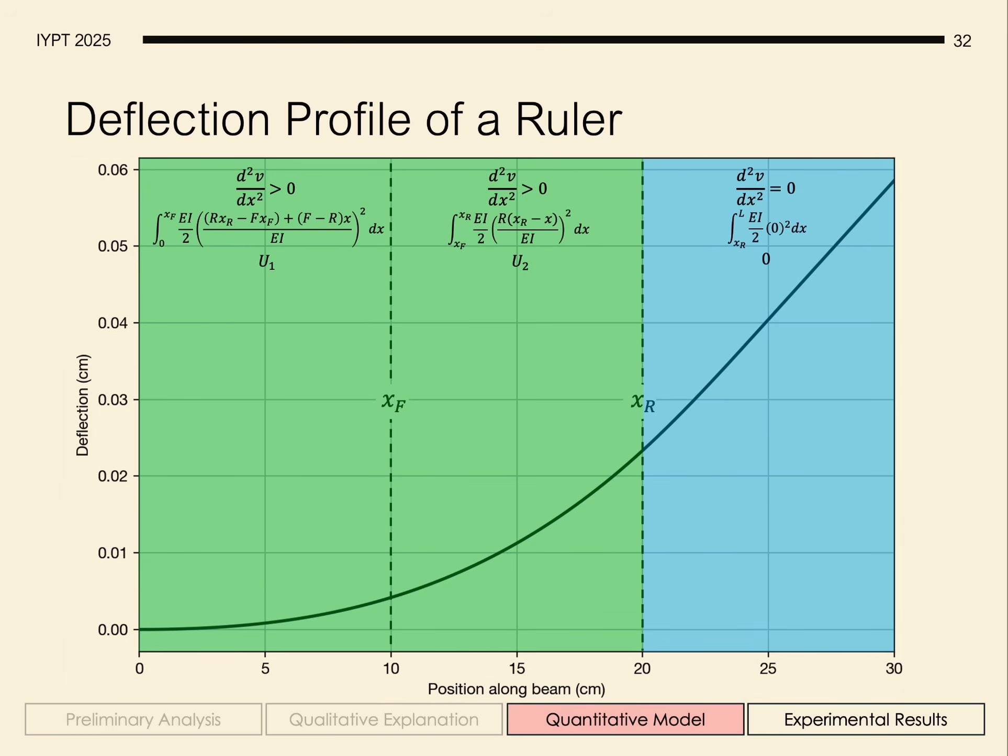However, in the third segment, notice that there's no curvature. So the second position derivative of deflection is zero. And therefore, the contribution of the ruler beyond that contact point between the ruler and the ball to the potential energy is actually zero. And this agrees with our observations and qualitative explanation.